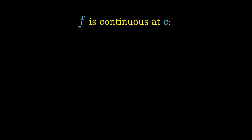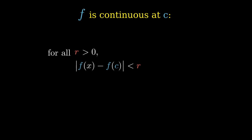So to recap: f is continuous at c means that if r is any positive number, we can guarantee that the distance between f(x) and f(c) is less than r purely by ensuring that the distance between x and c is less than some number, say s.